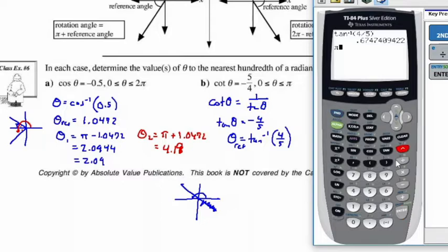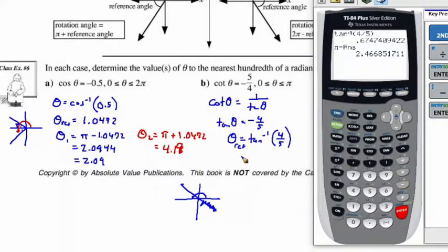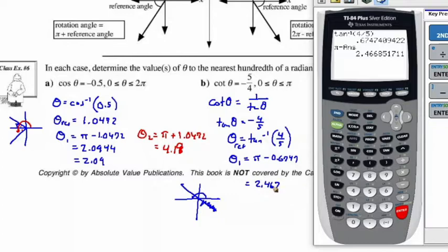So we have pi minus the reference angle. Remember, we're in radian mode. Pi minus 0.6747 is going to be 2.467. So the first angle is going to be equal to pi minus 0.6747, which equals 2.467. To the nearest hundredth of a radian, that's 2.5 — wait, let me correct that.